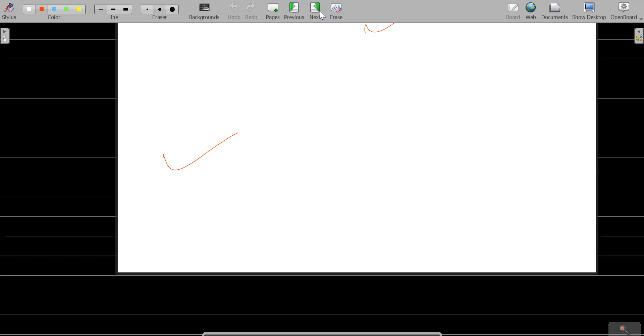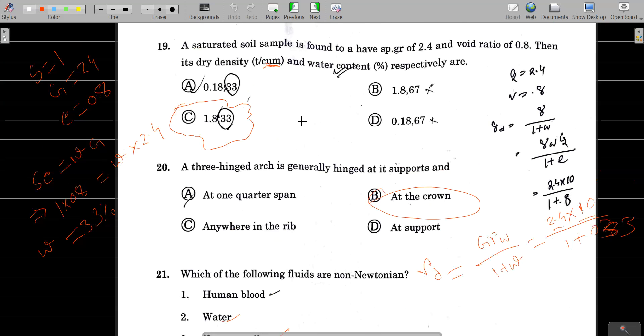Question number 19: Soil sample has specific gravity 2.4 and degree of saturation 1. Water content is 0.26. Using the formula, when we calculate, we get a value of approximately 0.18 or 1.8 times 10 to the power minus 1. So the answer is 1.8, which is option C.